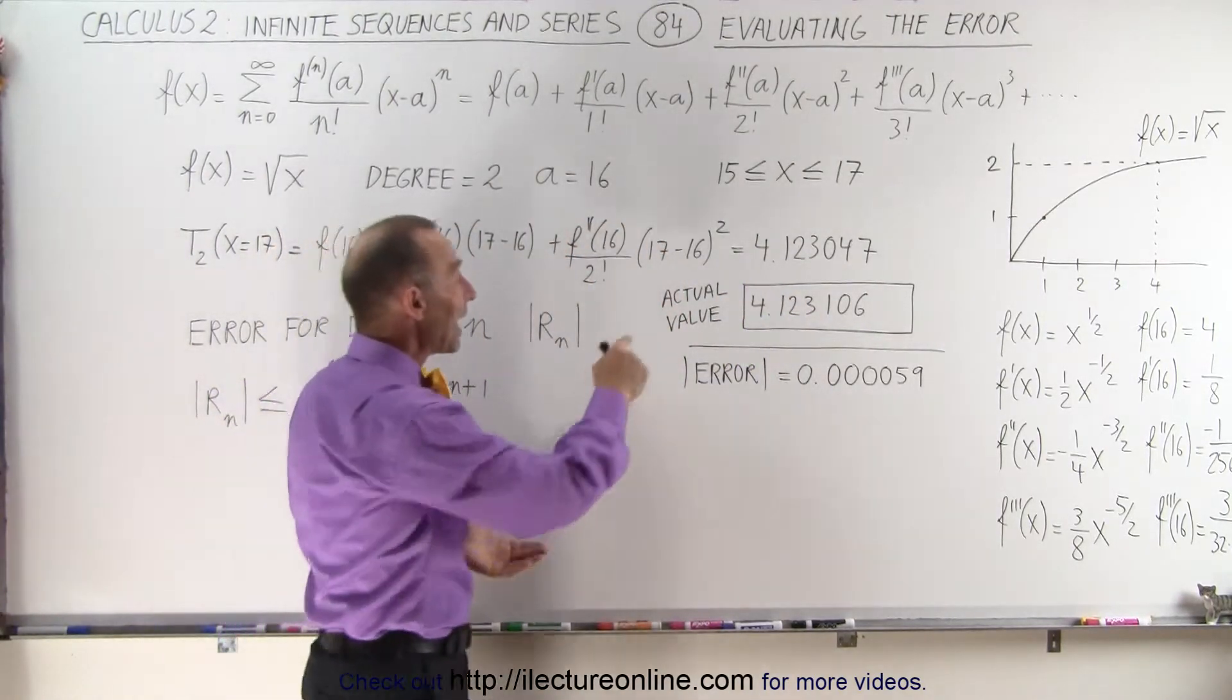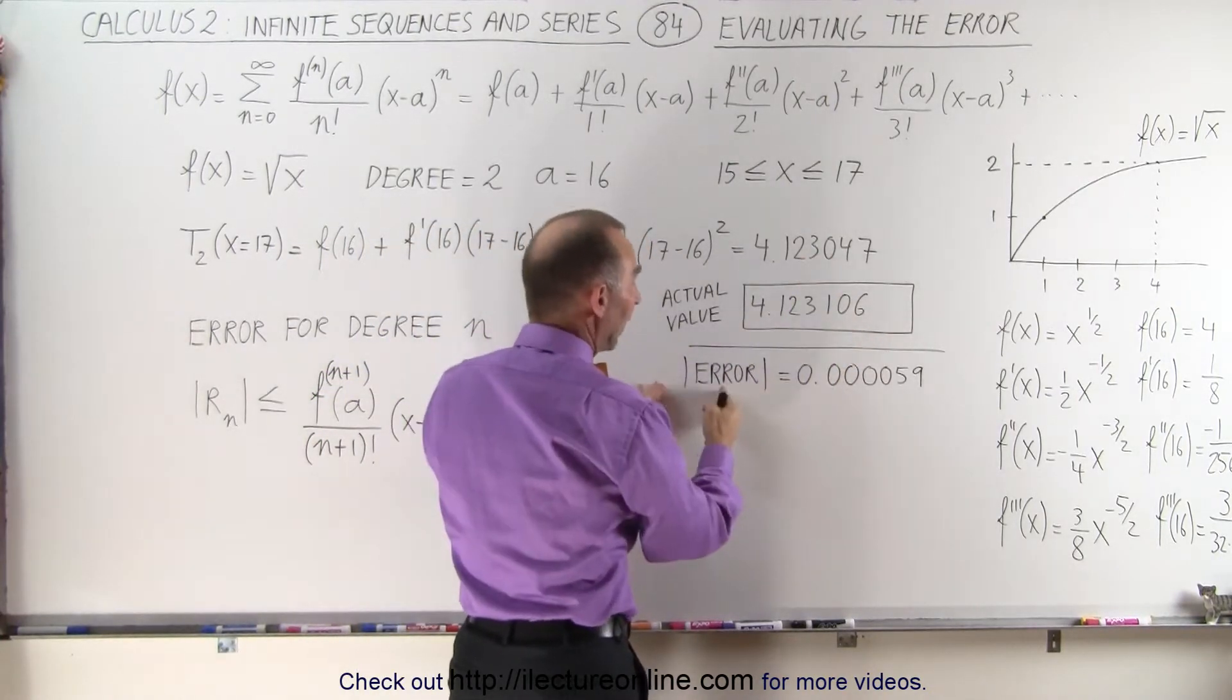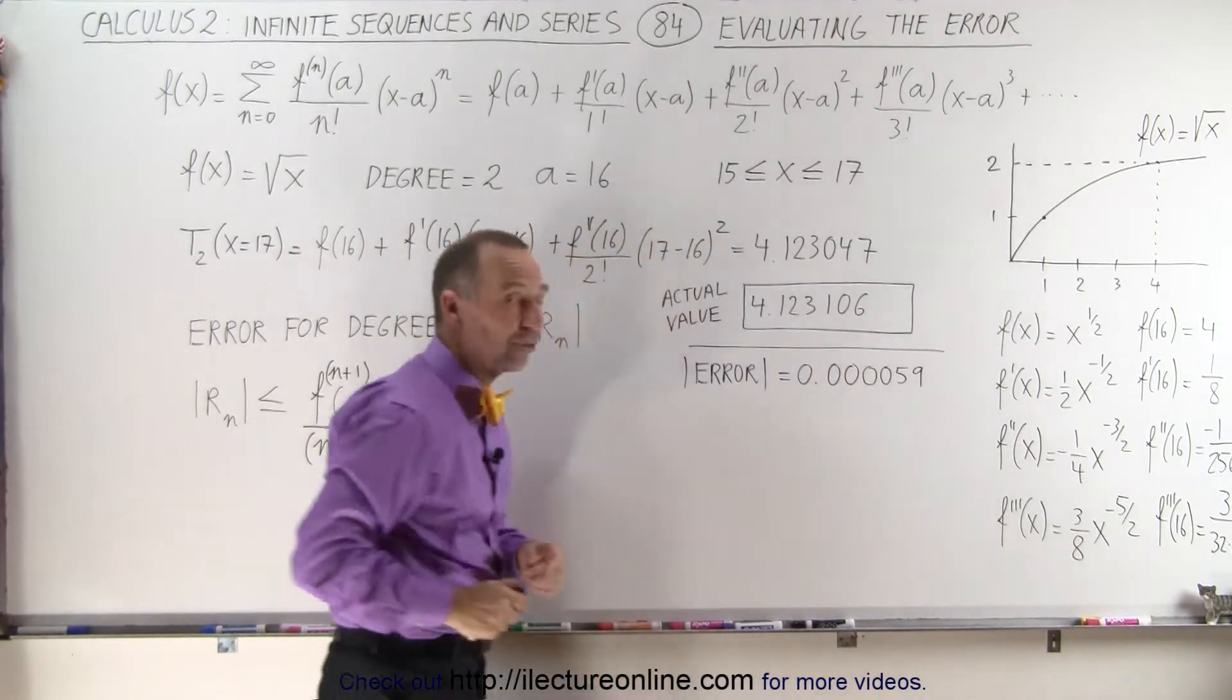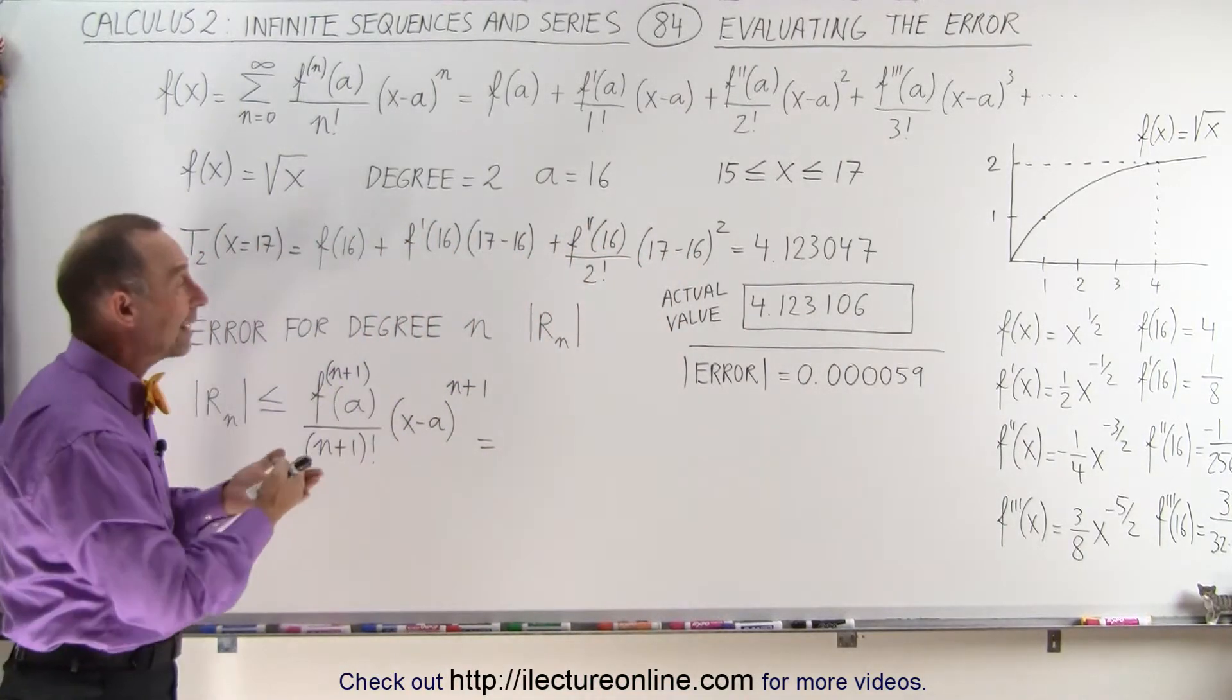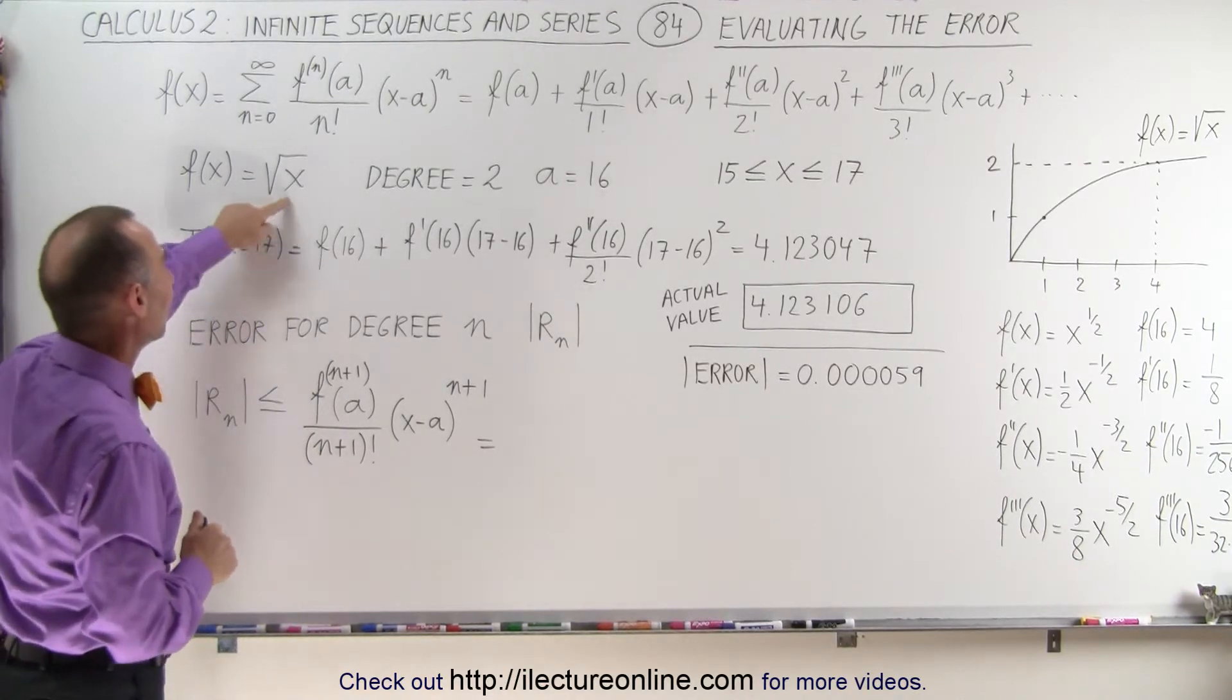With our calculator, we found that the actual value to six decimal places was this, with a difference or error that is very small. So you can see with only three terms, we got a value very close to the actual value for the square root of 17.